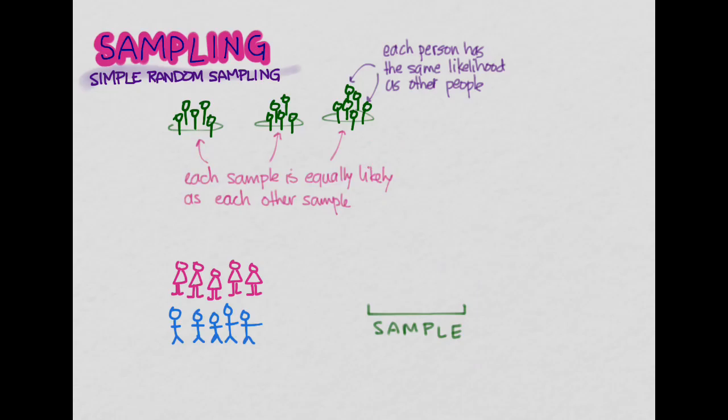More often, what you would do is you would just assign each one of these people a random number, and then through a random number table or a random number generator on a computer or a calculator, you would randomly pick who gets selected to be in the sample.